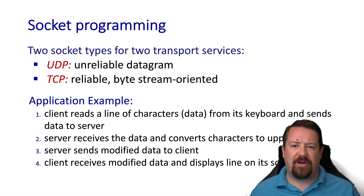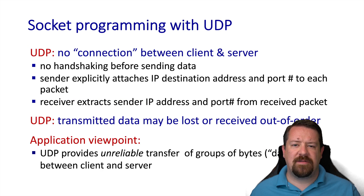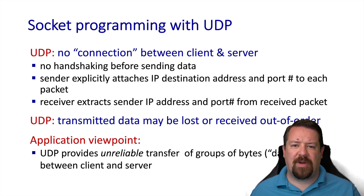Here's an example of a simple application which reads characters from the keyboard, sends them to a server which performs a manipulation of the character, and sends them back to the client, which displays them on the screen. Because UDP doesn't worry about reliability or reordering, it also doesn't need to establish a connection per se, so there's no handshake, which cuts down on control packets. The sender must tell the socket what IP address and port number to send each datagram to.